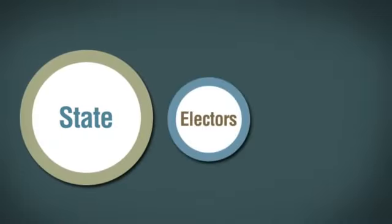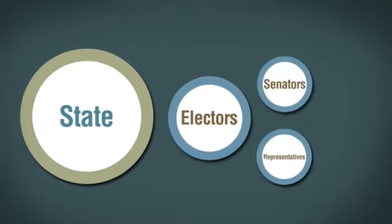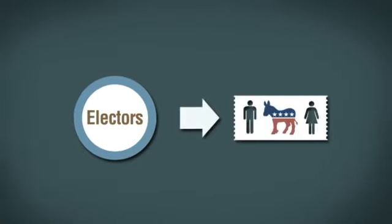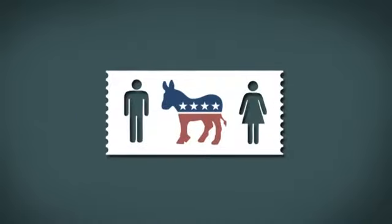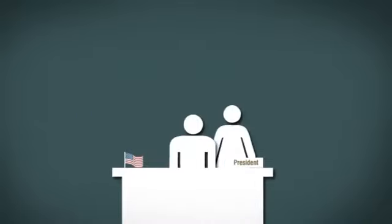Each state is allocated a number of electors that will make the final choice. A state has the same number of electors as it does senators and representatives. In most states, all the electors will vote for the presidential ticket which received the most support in the public vote. Finally, the presidential ticket with the most electoral college votes becomes president and vice president of the United States of America.